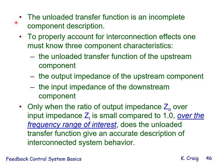The unloaded transfer function is an incomplete component description. A complete component description relates the variables whose product is power at the input port to the variables whose product is power at the output port — that is a matrix description. To properly account for interconnection effects, one must know three component characteristics: the unloaded transfer function of the upstream component, the output impedance of the upstream component, and the input impedance of the downstream component. Only when the ratio of output impedance Z sub O to input impedance Z sub I is small compared to 1 over the frequency range of interest does the unloaded transfer function give an accurate description.